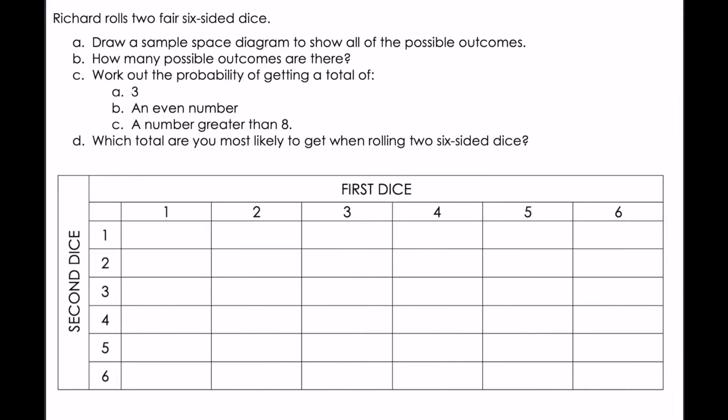Richard is rolling two fair dice, so my one die will have options one to six, and my second die will also be one to six. When I draw out my table, my first die has values one to six and my second die has values one to six. Filling out the sample space diagram: the first option would be one and one, then one and two, one and three, two and one, three and one, and so on.